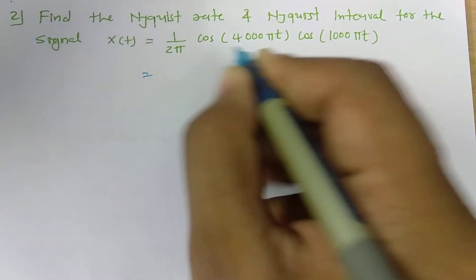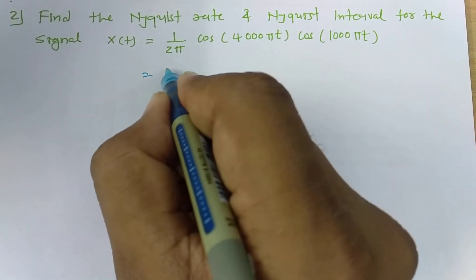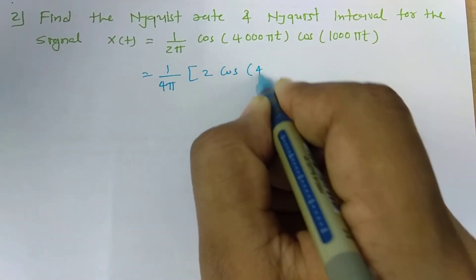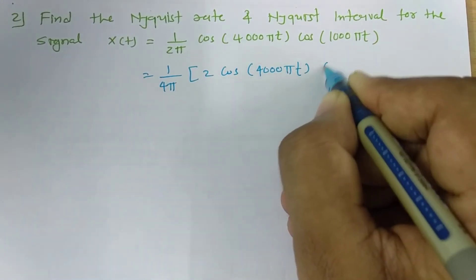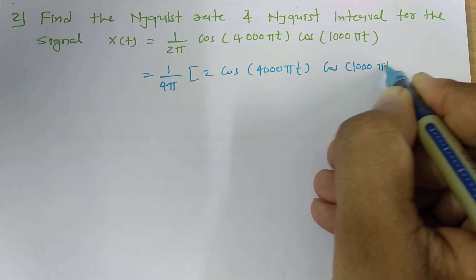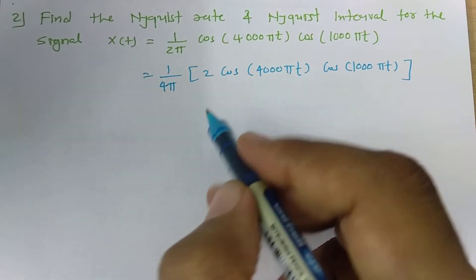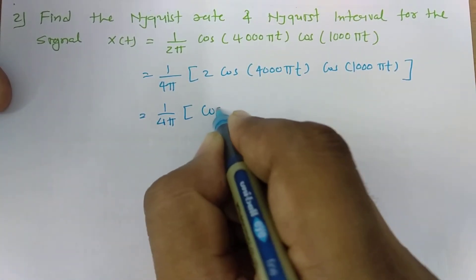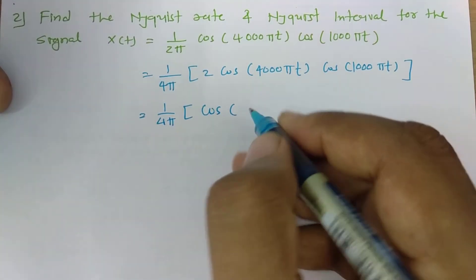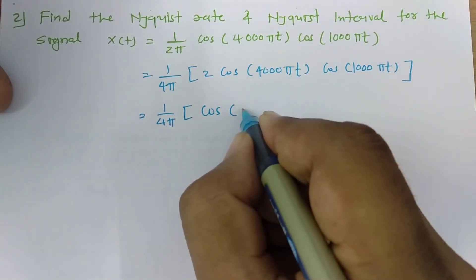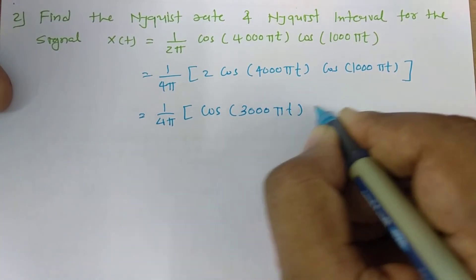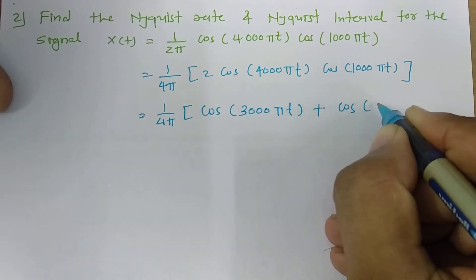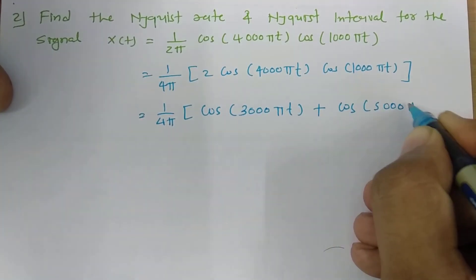To convert it, we multiply and divide by 2, giving us (1/4π) × 2cos(4000πt)cos(1000πt). Using the product-to-sum identity 2cos·cos = cos(A-B) + cos(A+B), this becomes (1/4π)[cos(3000πt) + cos(5000πt)].